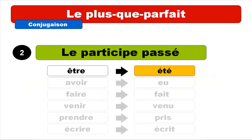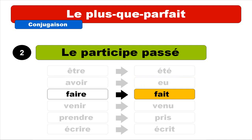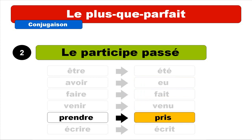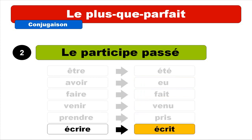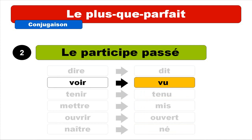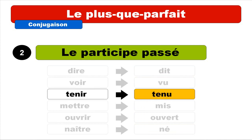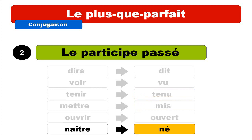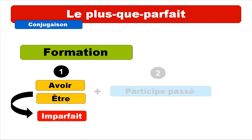We've got exceptions of course — we'll see the most important ones. Être becomes été, avoir becomes eu, faire becomes fait, venir becomes venu, prendre becomes pris, écrire becomes écrit, dire becomes dit, voir becomes vu, tenir becomes tenu, mettre becomes mis, ouvrir becomes ouvert, naître becomes né.